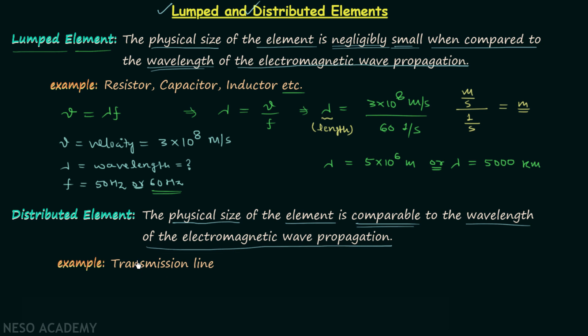For example, transmission line. If you have taken the course power system, then you must be knowing about the transmission line. They are required to transfer the electricity from generating station to city, and the distance between the generating station and the city is usually very large. For example, let's say our transmission line is 1500 kilometer long. So when you compare 1500 kilometers with 5000 kilometers, you will find they are comparable.